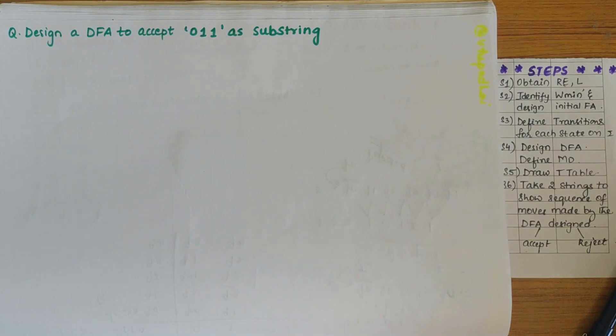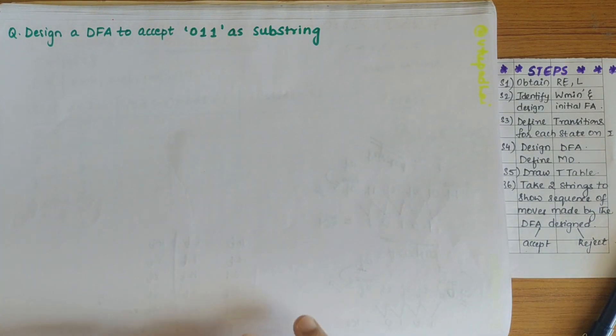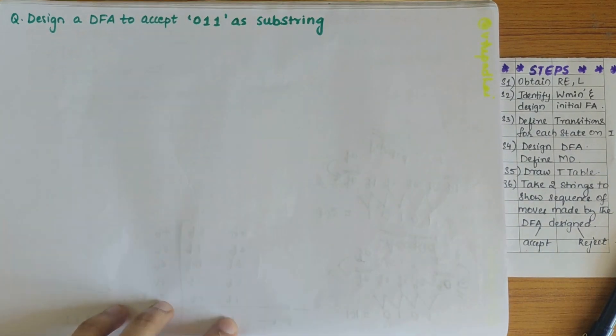In this video, we will be designing a DFA to accept 011 as a substring.